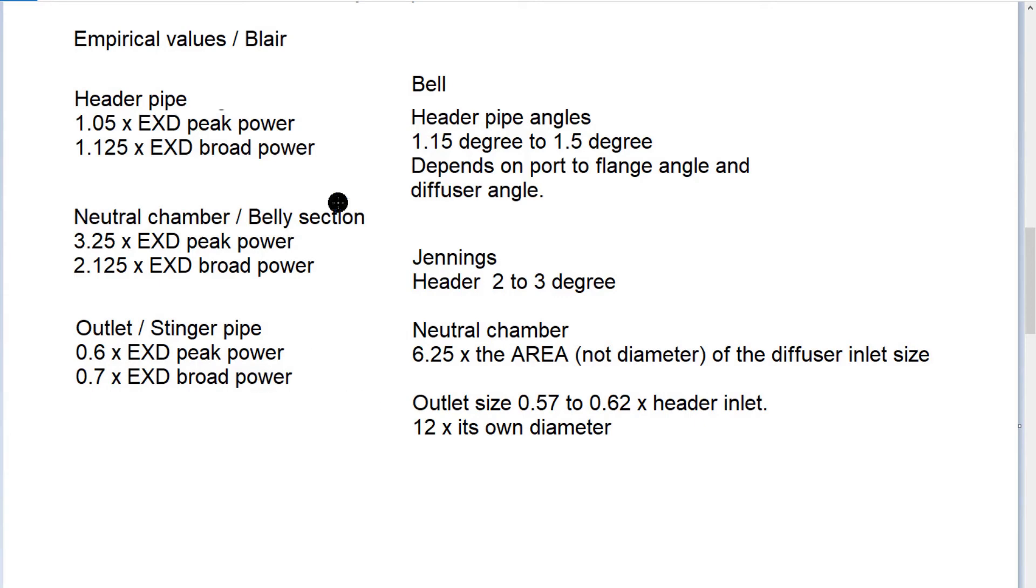There are values given for the header pipe angles by Graham Bell. These are in the 90s, I was into karting then a bit and tinkered with expansion chambers a bit then, but my biggest time in expansion chambers was in the 80s. So I was working from the Jennings formulas back then and these empirical values that Jennings gave because he'd got all these from measuring pipes that worked. These are for road racing bikes, because in the 80s I was road racing two-stroke 350 twins.